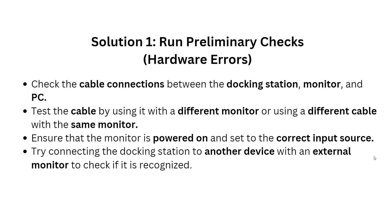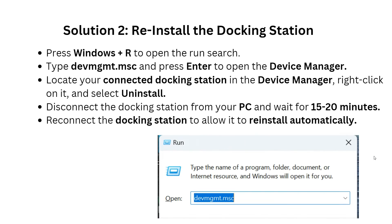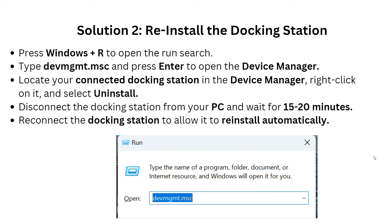First, check the cable connection between the docking station, monitor, and PC. Test the cable by using it with a different monitor, or use a different cable with the same monitor. Ensure that the monitor is powered on and set to the correct input source. Then try connecting the docking station to another device with an external monitor to check if it is recognized.